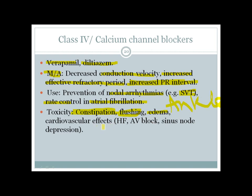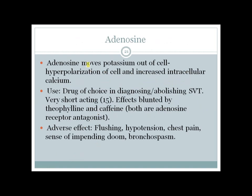Like all antiarrhythmics, class 4 agents have cardiovascular depressant effects including heart failure, AV block, and sinus node depression. Adenosine works by a different mechanism — moving potassium out of the cell causing hyperpolarization. It is the drug of choice for diagnosing or abolishing supraventricular tachycardia. A major limitation is its very short half-life of around 15 seconds. Its effects are blocked by theophylline and caffeine, which are adenosine receptor antagonists.